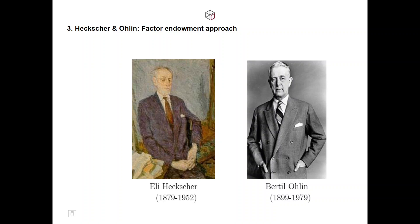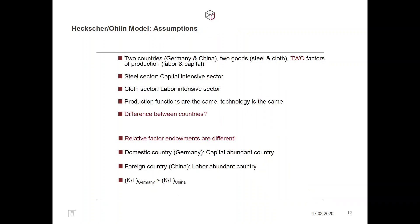We can see this difference directly in the assumptions of the model. We are looking at two countries — Germany and China — two goods — steel and cloth — and two factors of production: labor and capital. We assume the steel sector is capital intensive while the cloth sector is labor intensive. Producing steel requires a lot of capital but not much labor; producing cloth requires a lot of labor but not much capital.